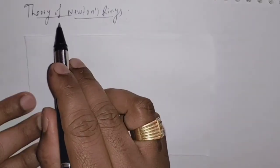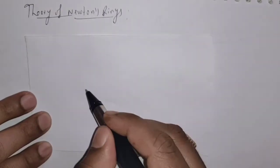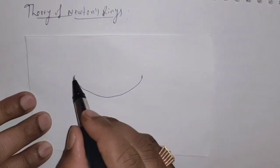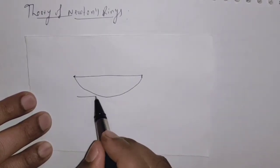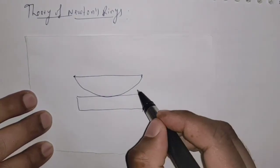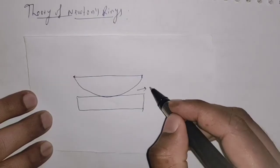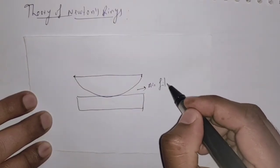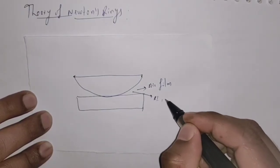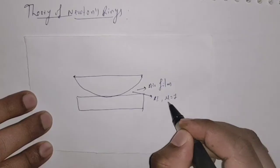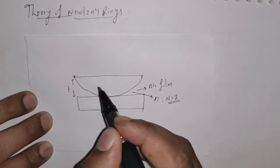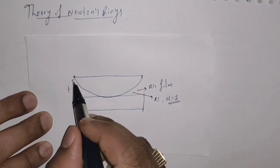To explain the theory of Newton's rings, I am going to consider an experimental arrangement — that is, a plano-convex lens and a glass plate. Here, a thin wedge-shaped air film is formed, having refractive index mu equal to 1 for air, and a thickness T.